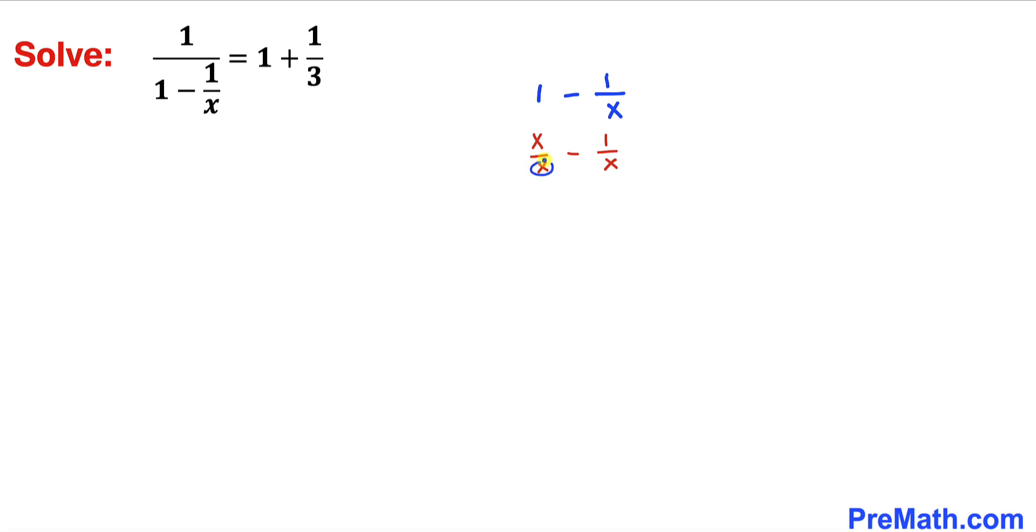Now we can see x is our common denominator. I can write x over here, and on the numerator is going to be x minus 1.